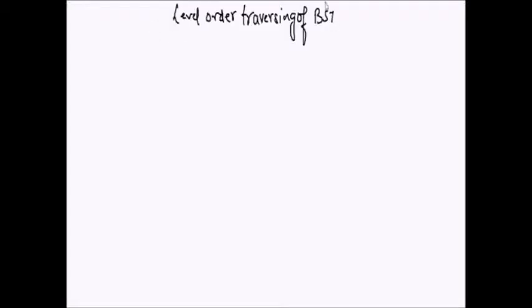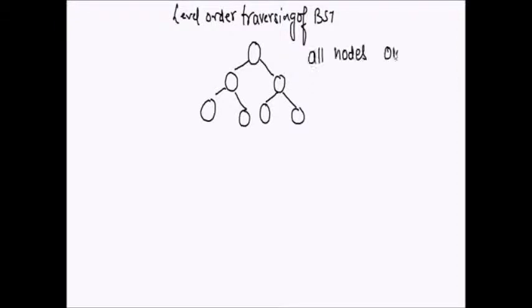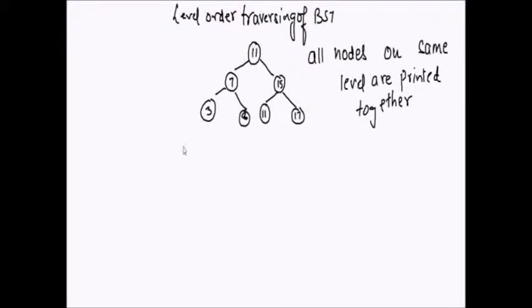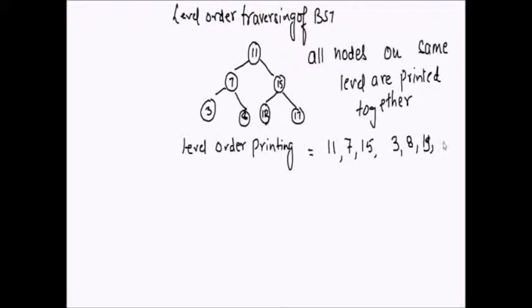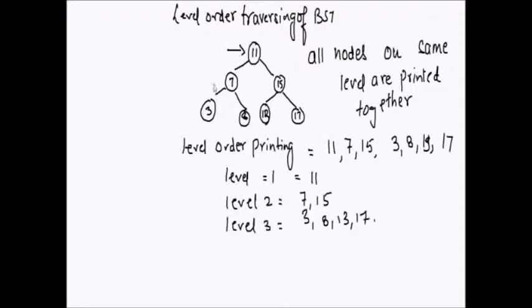Today we will be discussing another problem on binary search tree. The problem is level order traversal of a binary search tree. Level order traversal means we will be traversing each node in a fashion where all nodes on the same level are printed together. So if this is our binary search tree, level order printing will be 11, 7, 15, 3, 8, 13, 17 — level 1, level 2, level 3.